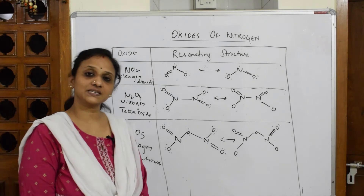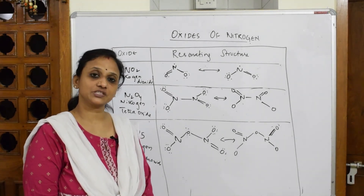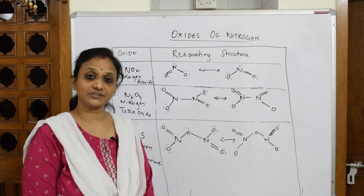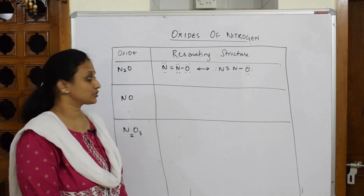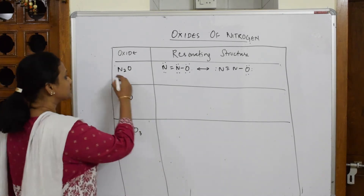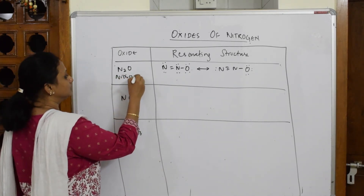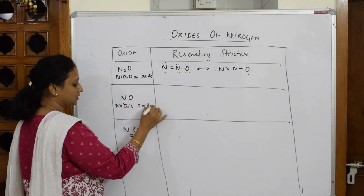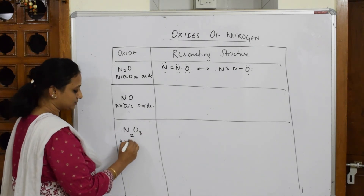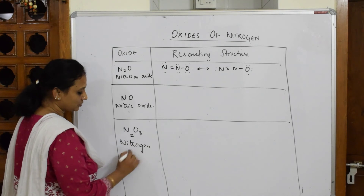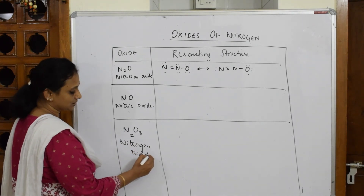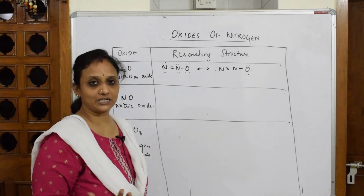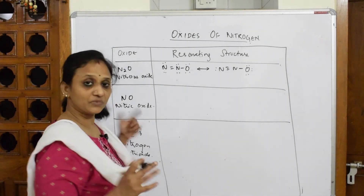Now let's start with the next concept — nitrogen compounds, including ammonia and nitric acid. Reviewing the oxides: N₂O is nitrous oxide, NO is nitric oxide, N₂O₃ is nitrogen trioxide. When they directly ask you to draw the structure of nitric oxide, you must know both the formula and name of that compound.